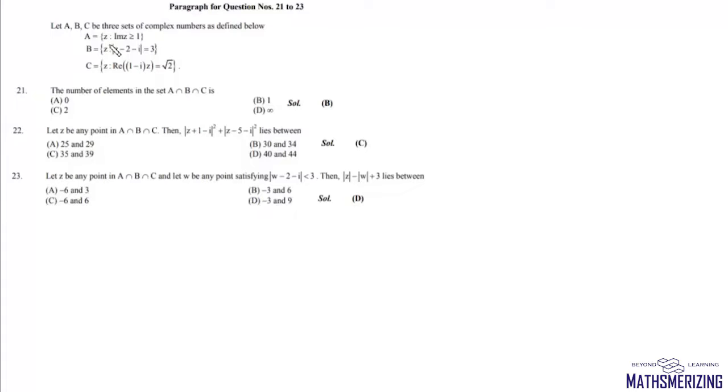Now a is all z such that imaginary part of z is greater than or equal to 1. So we'll draw the axis and then we'll draw this line which is y equals 1. So a consists of